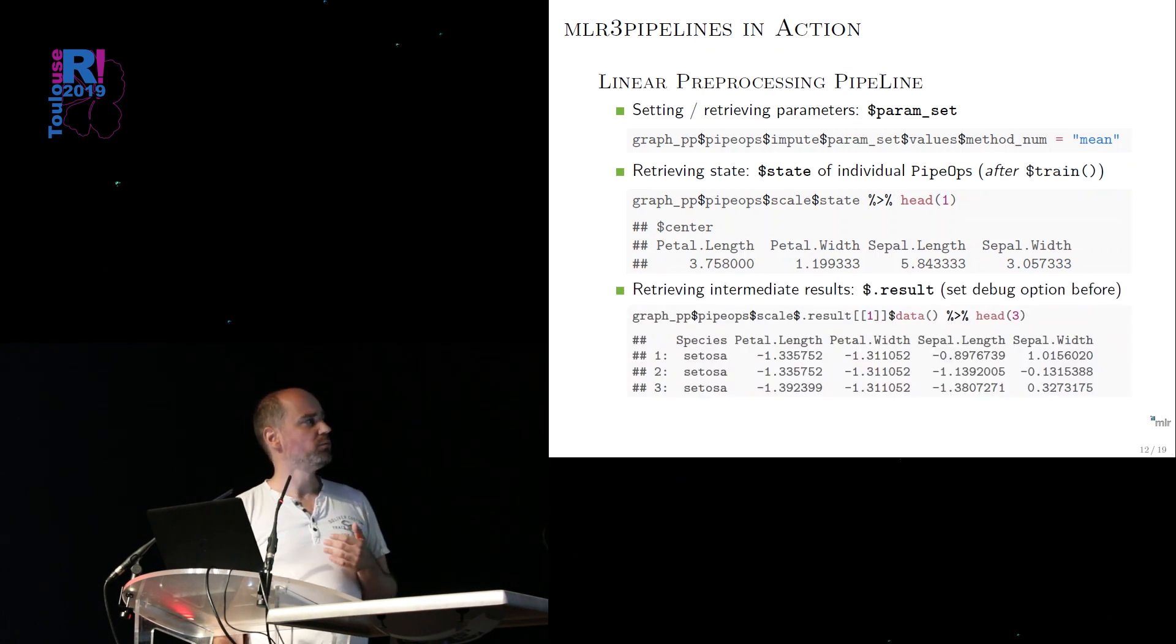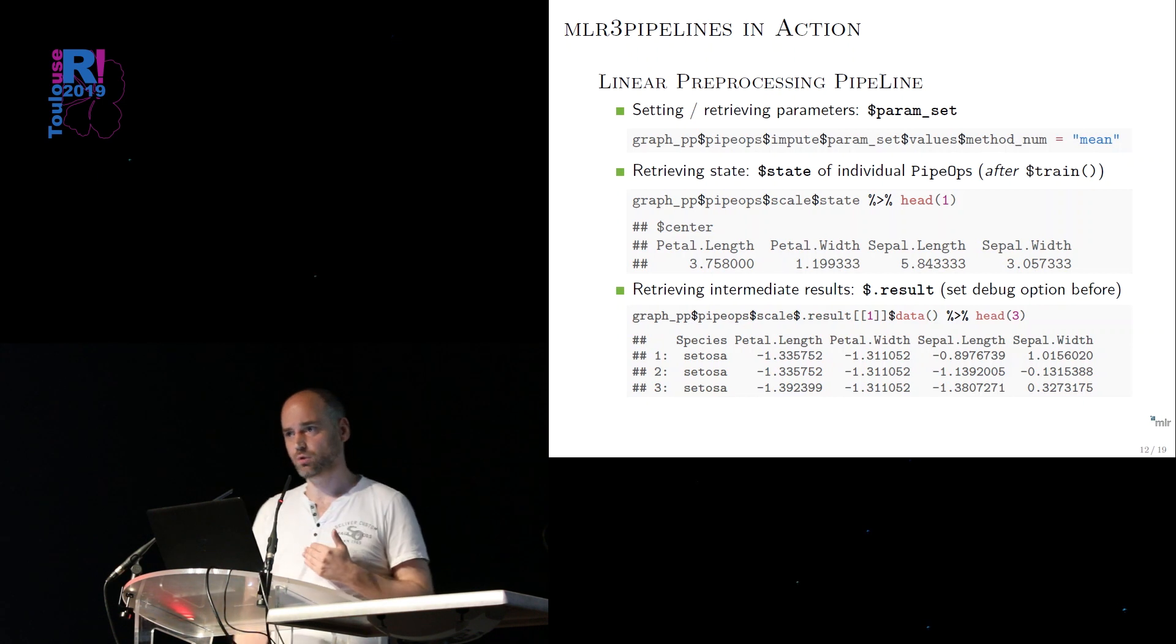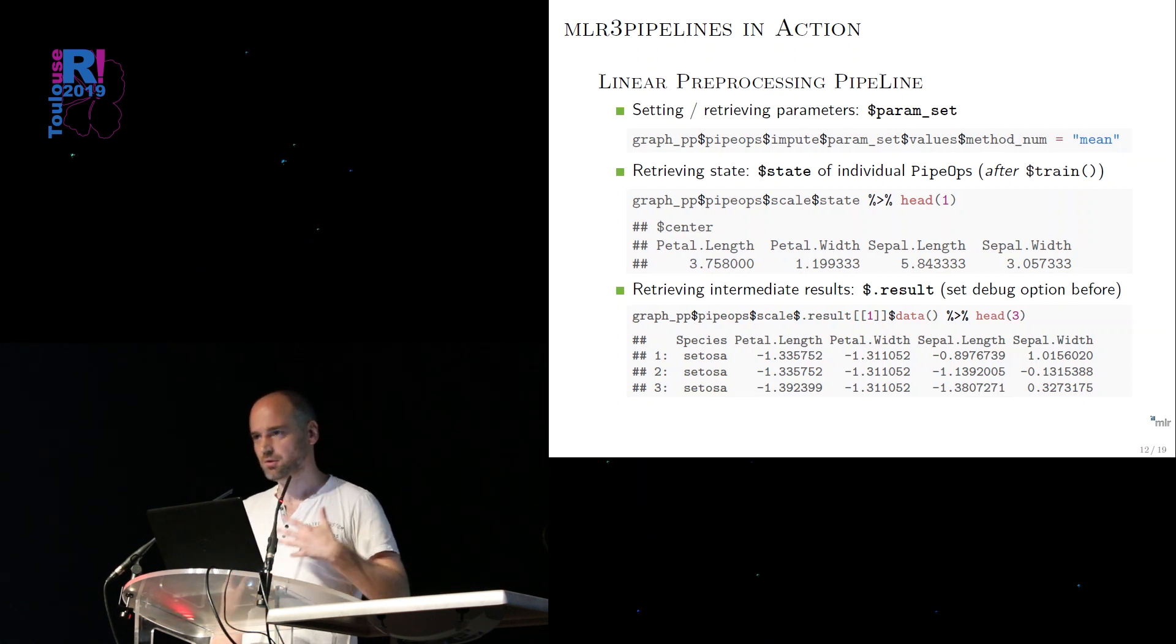And for debugging, also I think pretty important, you can also access intermediate results. So the intermediate transformed output data of the pipe op you can also access. Reach into the list. Access the dot result slot. And you can look at that. I think that's important if you're setting up stuff for the first time and want to debug with this a bit. We don't store this for memory reasons during normal execution. But you just set a flag and then you can do that.